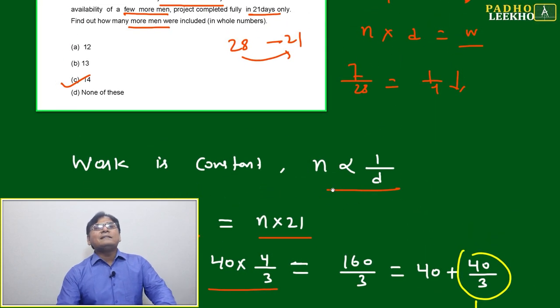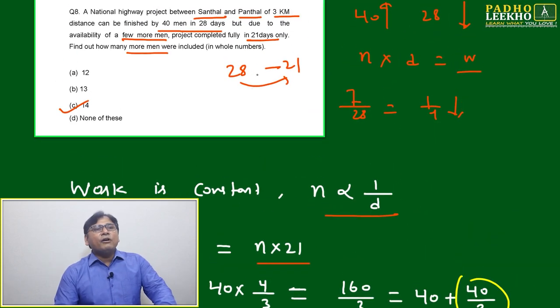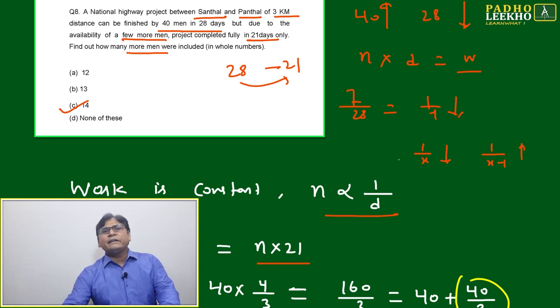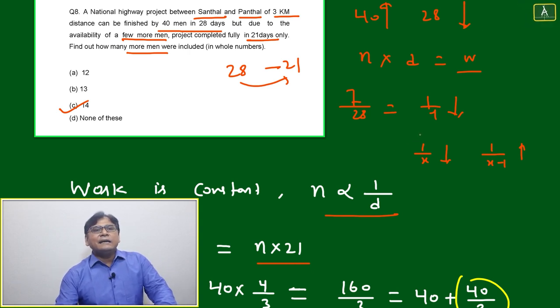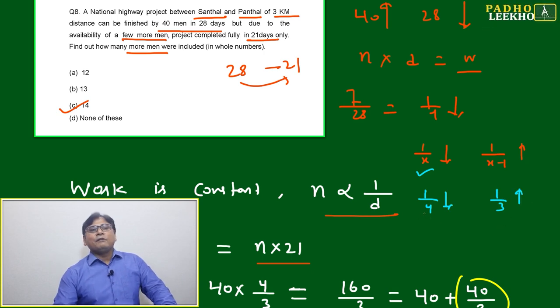If number of days decrease by 1 by x, then it will increase by 1 by x minus 1. We already know this simple equation. Here number of days are decreased by 1 by x, then what will happen? How much will number of men increase? 1 by x minus 1. This is decreased by 1 by 4, this will increase by 1 by 3.